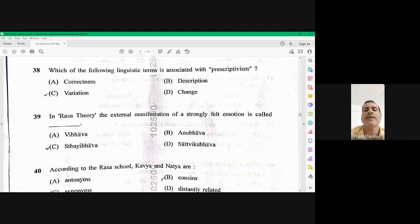Question number 39, in Rasa theory, the external manifestation of a strongly felt emotion is called as the right option is Vibhava. Option A, external manifestation is Vibhava. A strong emotion is called Vibhava.